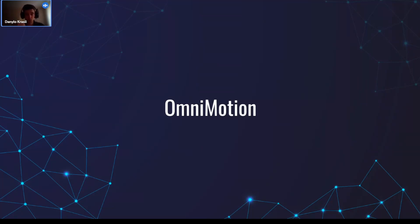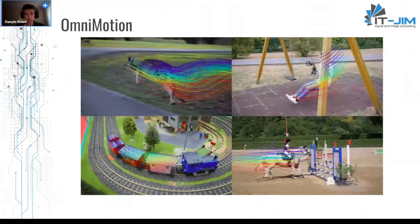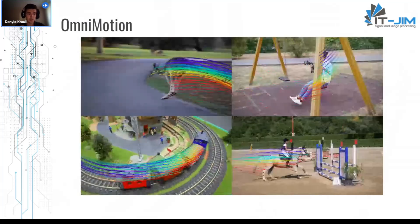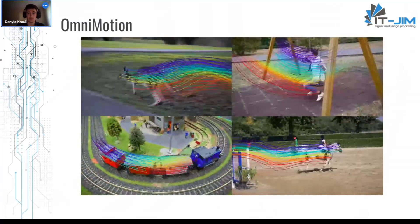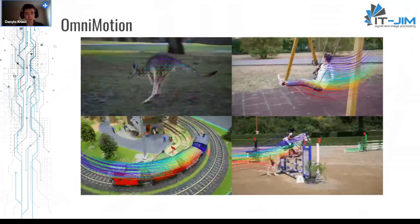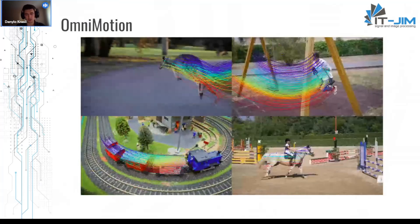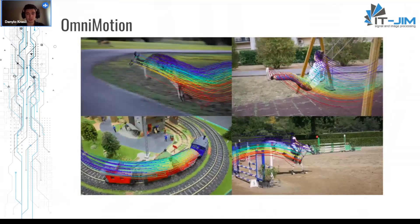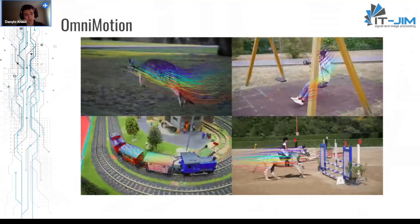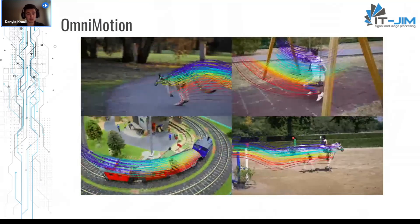The authors presented an OmniMotion algorithm that can maintain accurate tracks across long sequences, tracking points through occlusions and also maintaining coherence in space and time. OmniMotion represents a video using a quasi-3D canonical volume and performs pixel-wise tracking via bijections between local and canonical space. This representation allows to ensure global consistency, track through occlusions, and model any combination of camera and object motion.